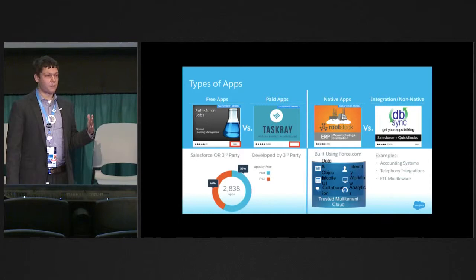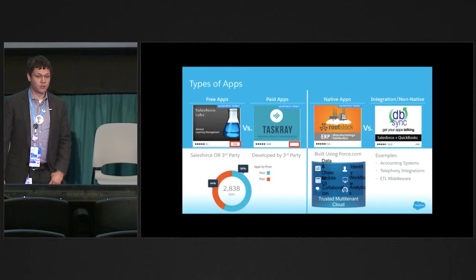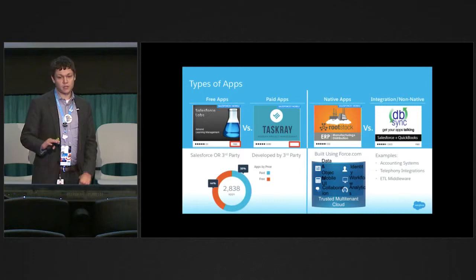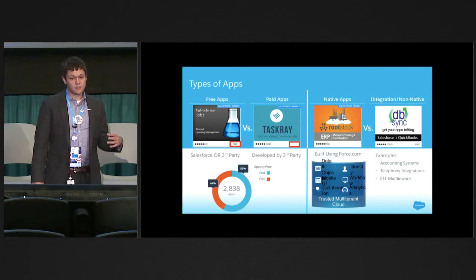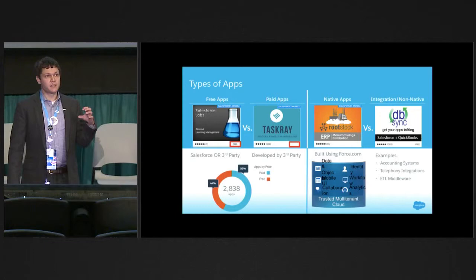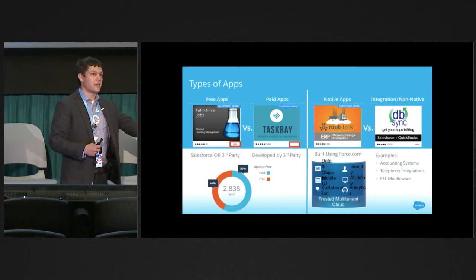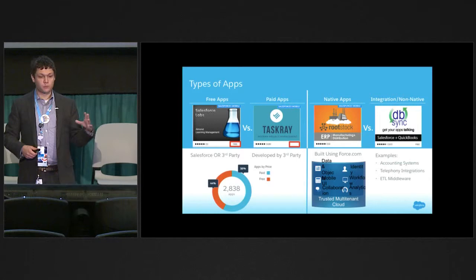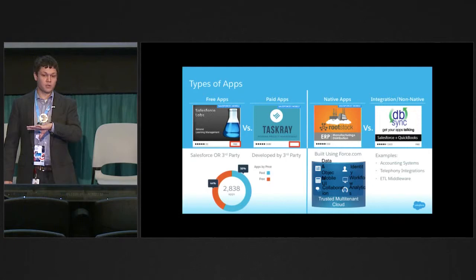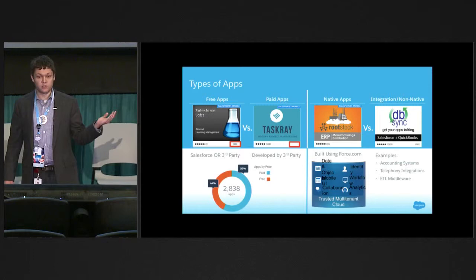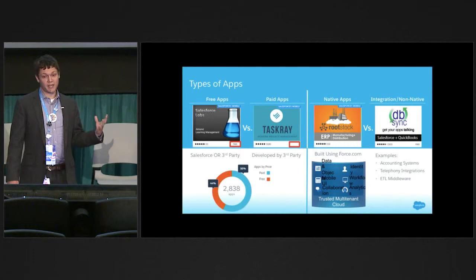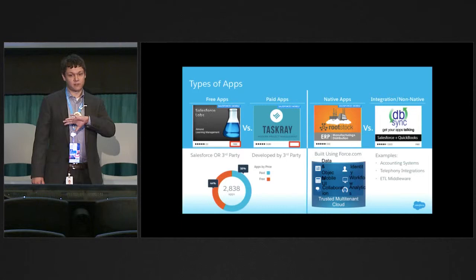It's split about right down the middle — about half paid, half free, as you can see in the WAVE dashboard. Additionally, there's a classification between native and non-native apps. A native app is pre-built functionality customized using Salesforce — things like creating fields, workflow, packaged up and made available for you. These take advantage of Salesforce dashboards and reports. Non-native apps serve a different function — they're typically integrations with something like QuickBooks, such as DBSync. Sometimes they're external integrations for telephony, giving you screen pops when somebody calls in to reduce handle time, or middleware.